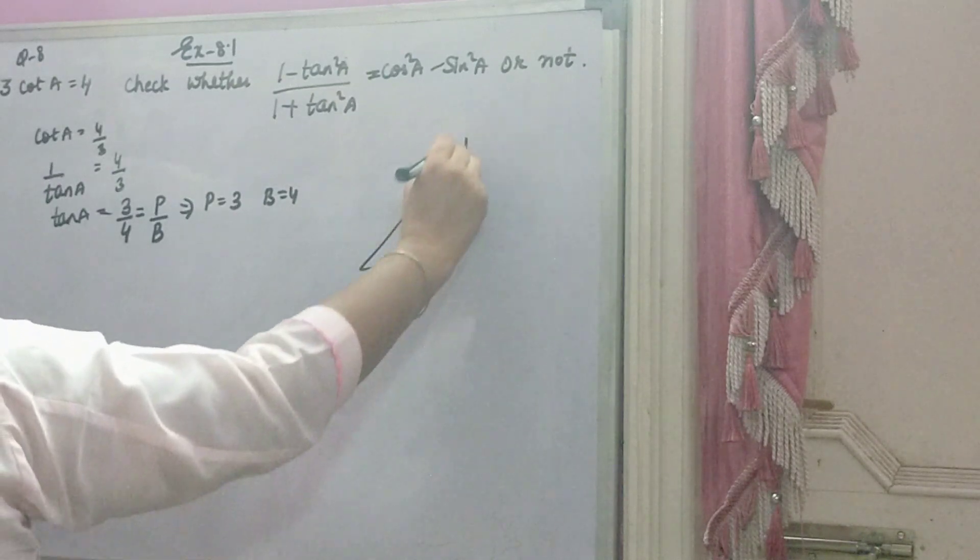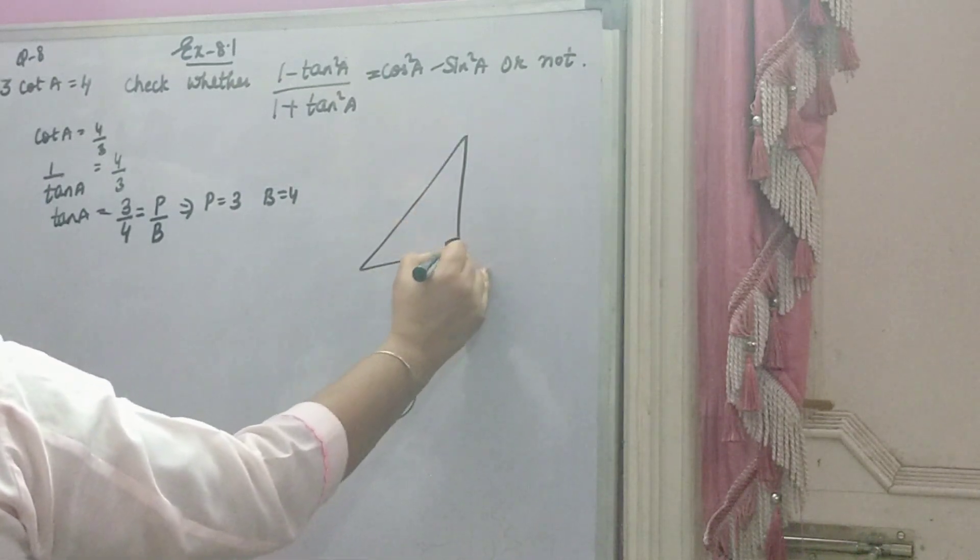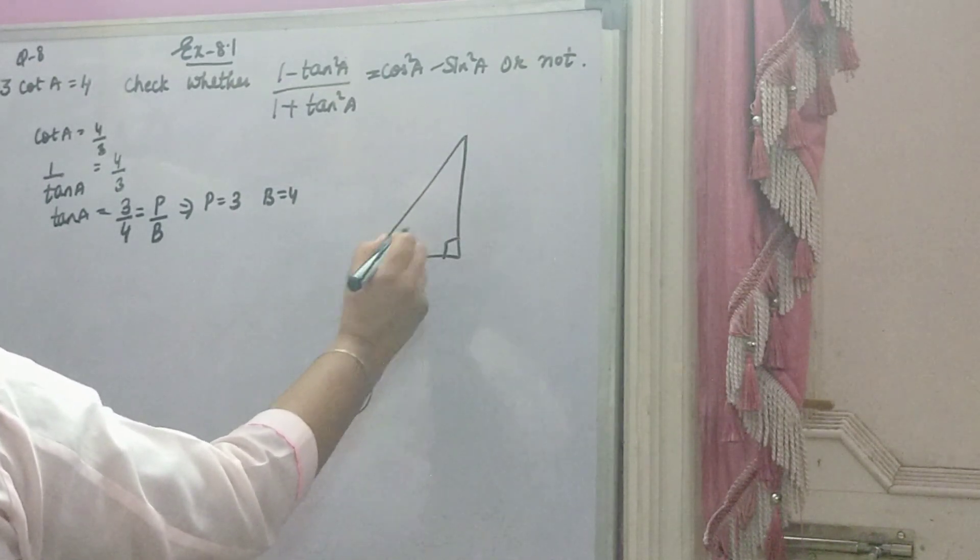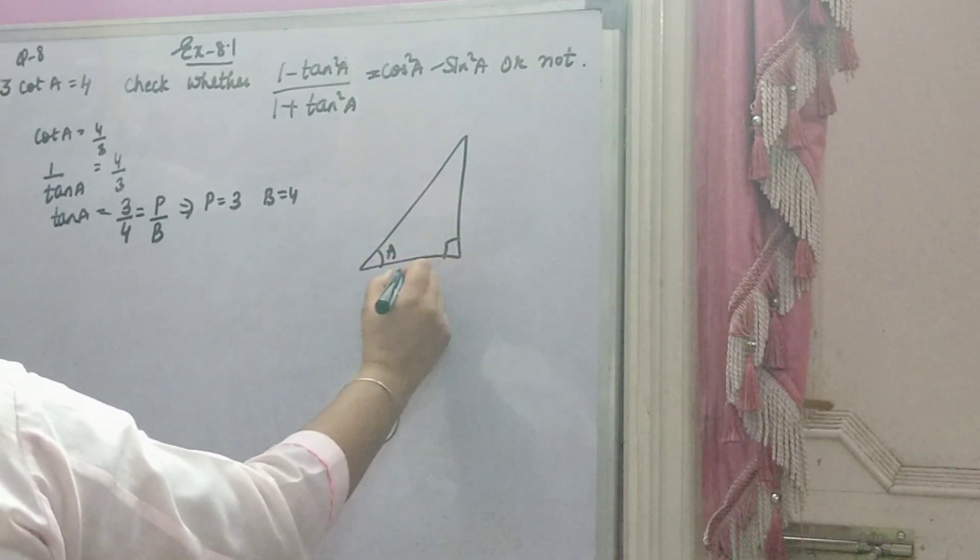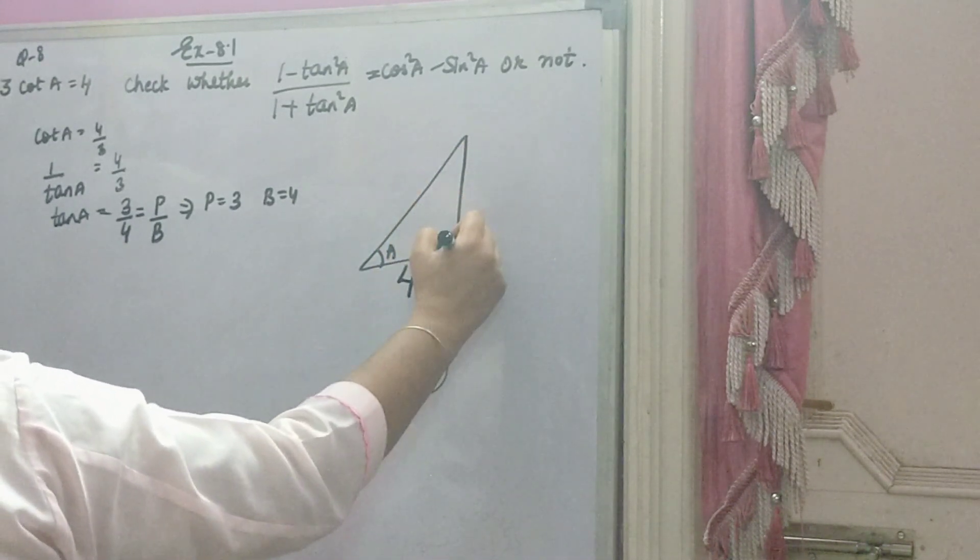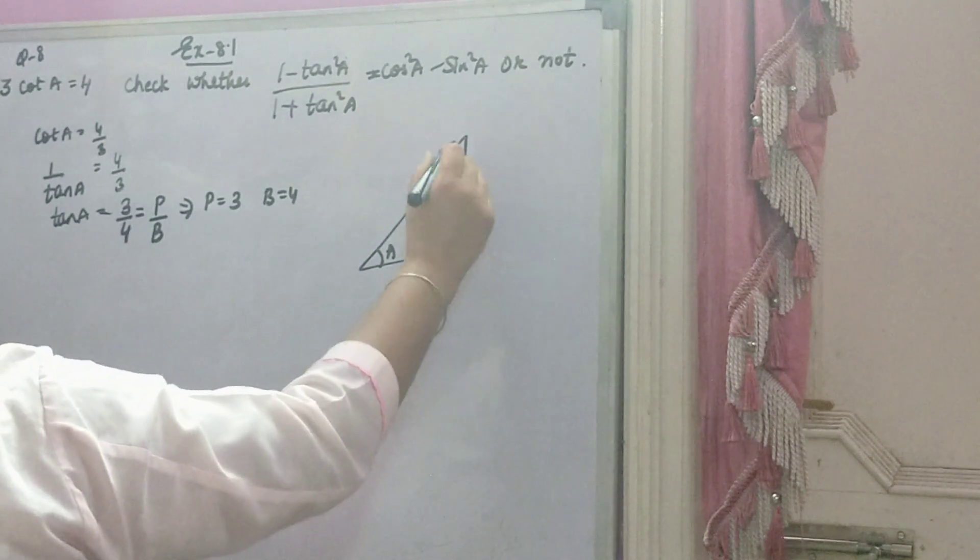Ab idar se dekho. Ye perpendicular, agar ye angle A hai, toh ye perpendicular hai, toh ye base ho gai. Means, ye 4 a gaya. Perpendicular a gaya 3.